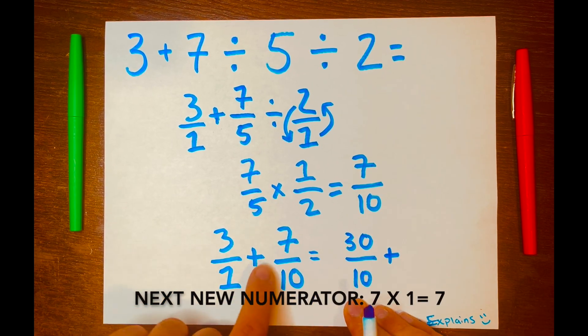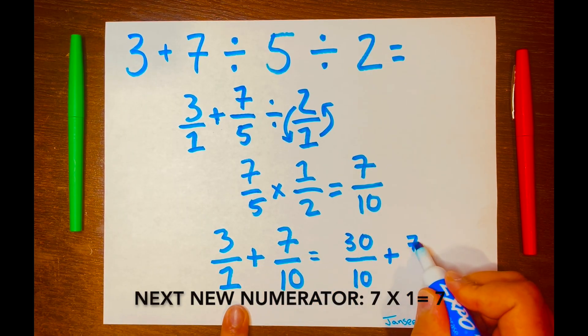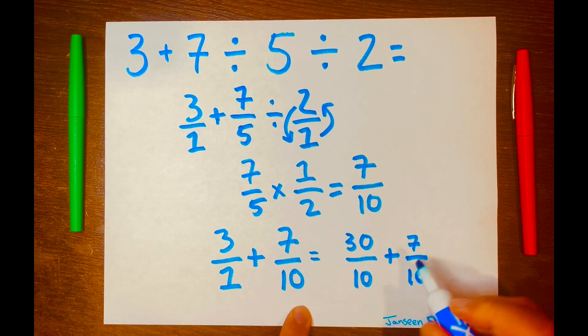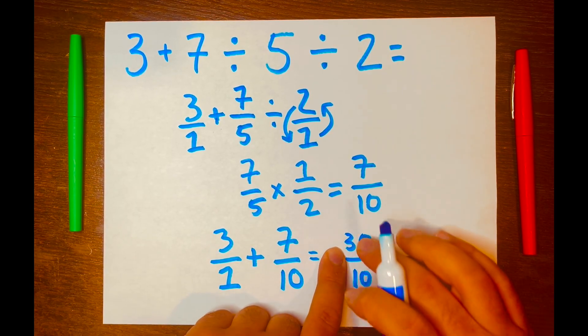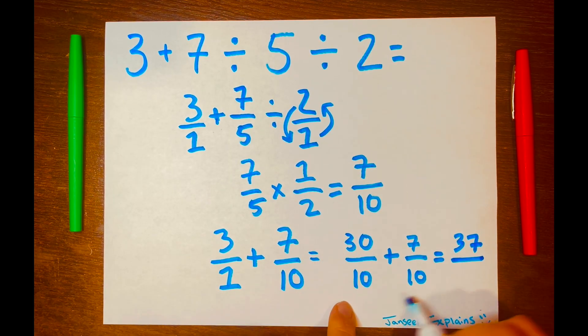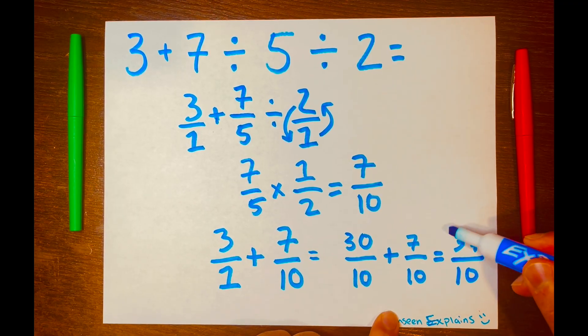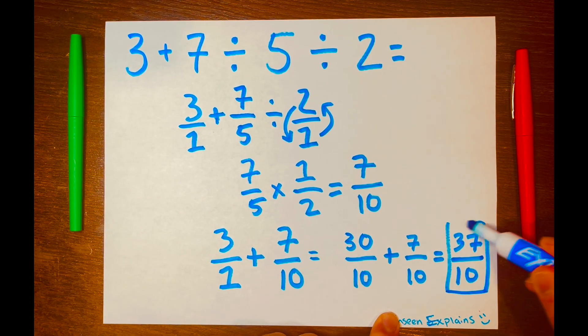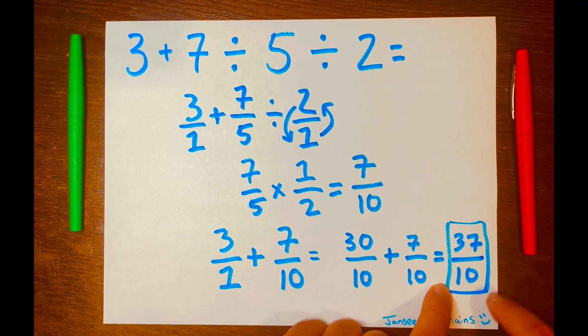Plus, then we cross multiply 7 times 1, so 7 times 1 is 7 over 10. And then we just add across. So 30 plus 7 is 37 over, we keep the 10 the same. So our answer is 37 over 10. This cannot be simplified further. So this is it.